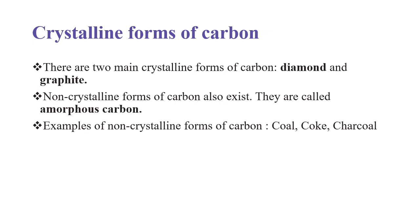There are two main crystalline forms of carbon: diamond and graphite. The non-crystalline forms of carbon are also called the amorphous carbon. There are different examples of non-crystalline forms. We have coal, we have coke, we have charcoal, and also we have another form called soot.